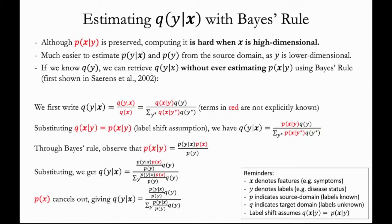Unfortunately, I don't have time to go through the derivation in detail, but since this is recorded, I put the derivation on the slide in case you'd like to pause the video. The key takeaway is just that the terms that are difficult to estimate cancel out and we get an expression for q(y|x) that uses only the classifier p(y|x) and the class proportions p(y) and q(y). We never have to estimate p(x|y).